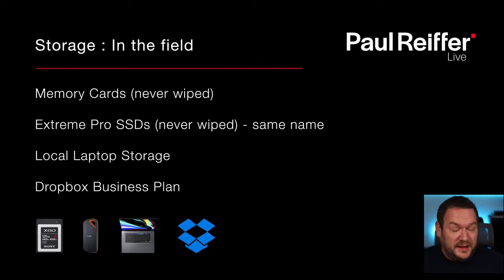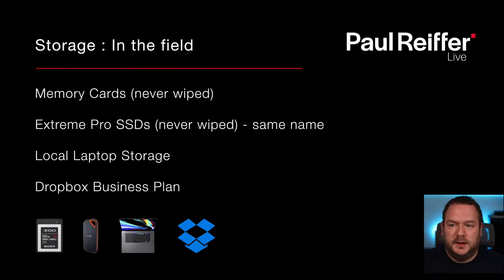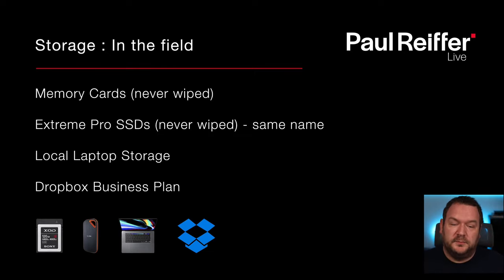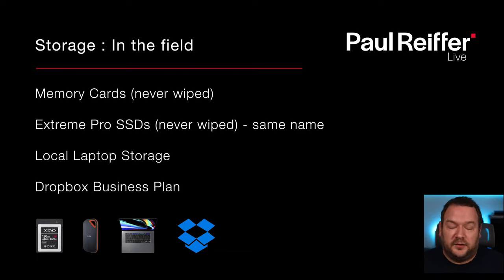Practically, in the field - and this isn't necessarily the right answer, just what works for me, and it's not a cheap option. Memory cards: I never wipe them. I'll burn through a memory card and keep it for that shoot. I have effectively two card slots - one is an SD, the other is CF Express or XQD. One I keep forever - the cheaper SD. The XQD gets recycled for each different shoot. The SD cards get hived off and stored and never overwritten.